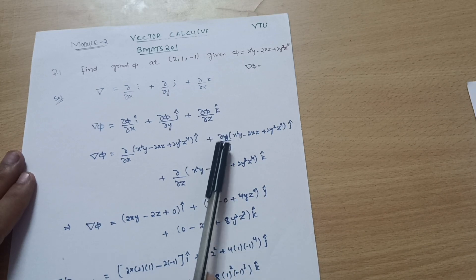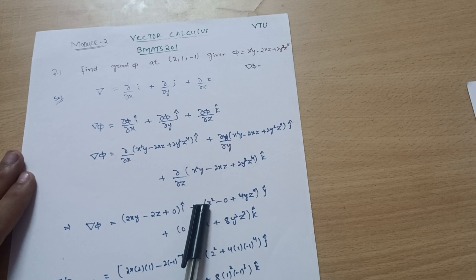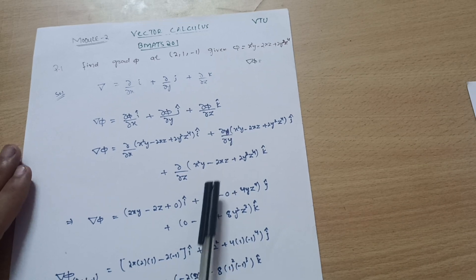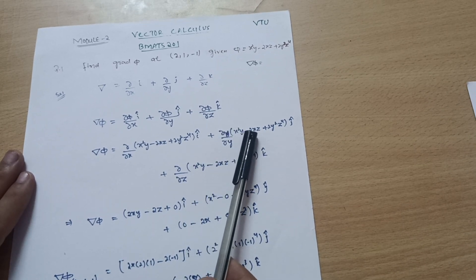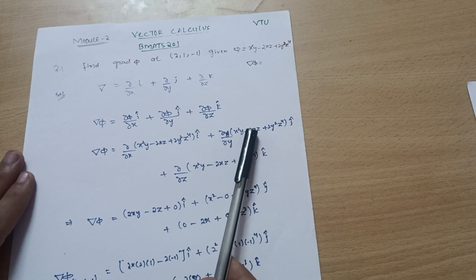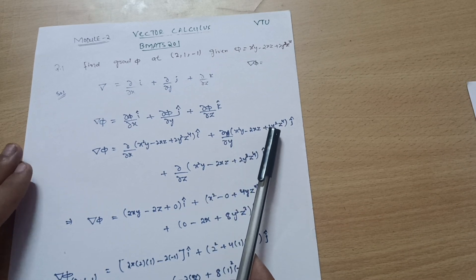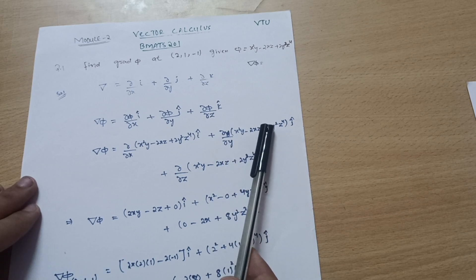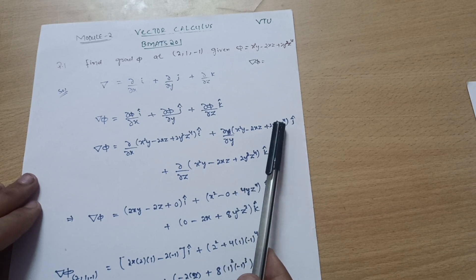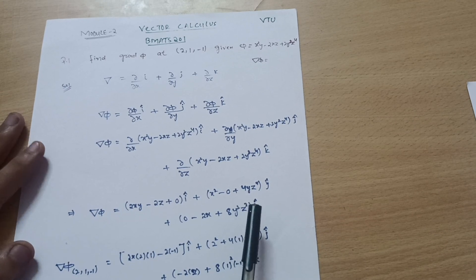Differentiating with respect to y: for x²y, x² is constant and differentiation of y is 1, so it gives x². For -2xz, y is absent so differentiation is 0. For 2y²z⁴, z⁴ is constant and differentiation of y² is 2y, so 2×2y = 4yz⁴. Therefore ∂φ/∂y = x² + 4yz⁴.